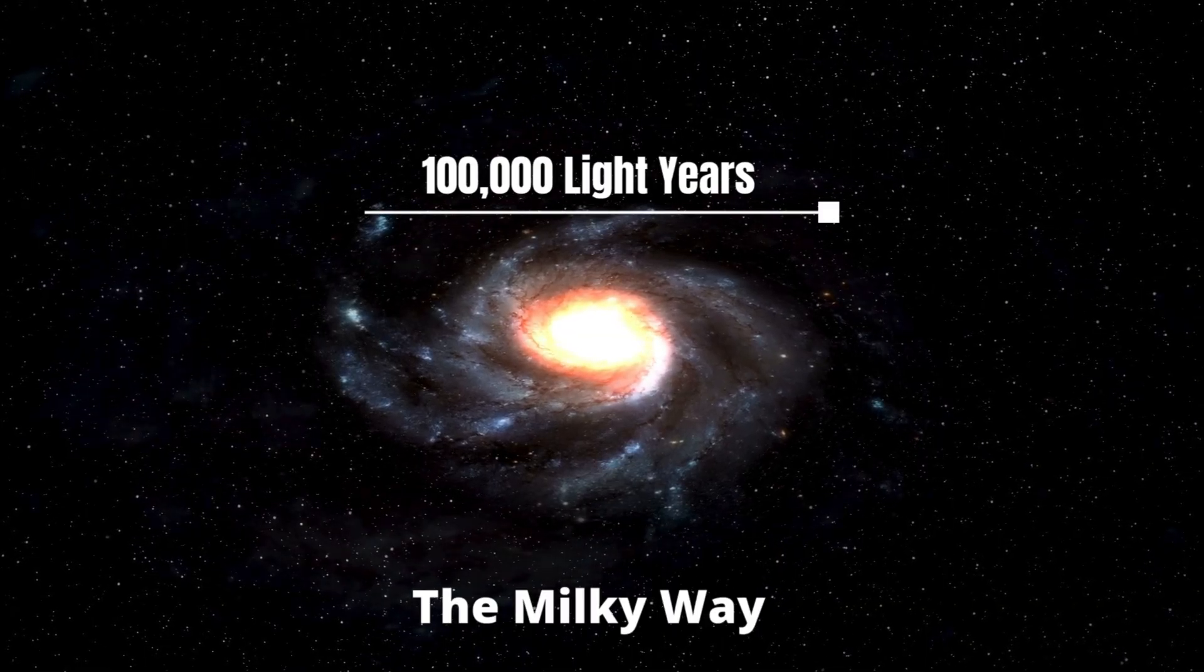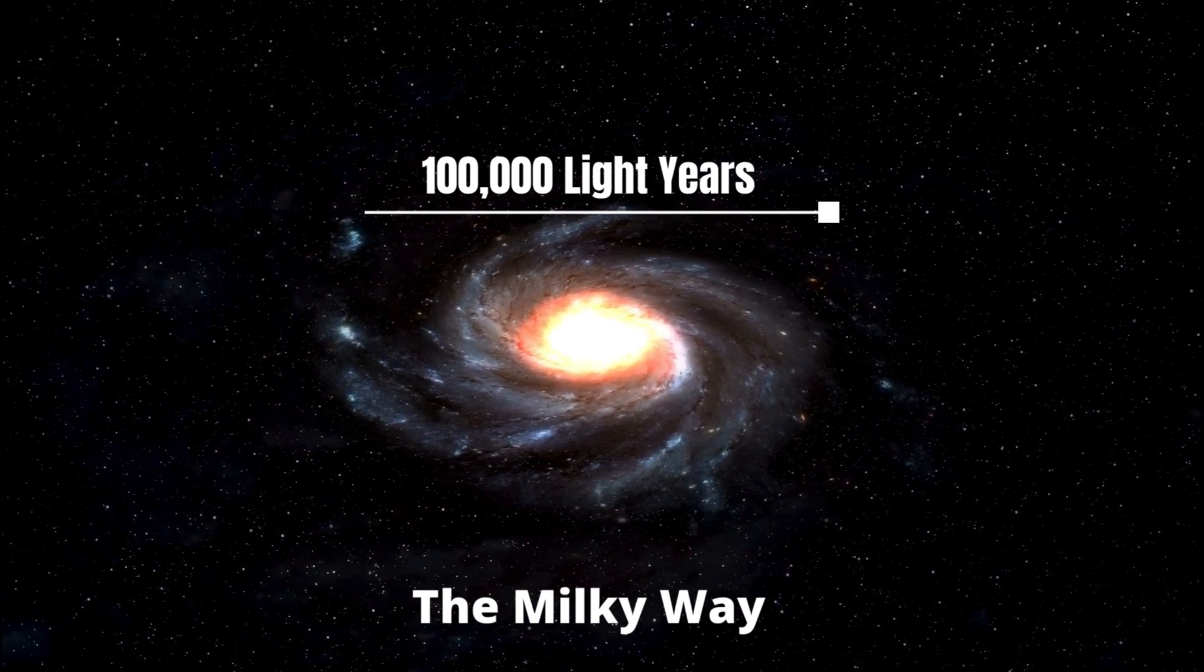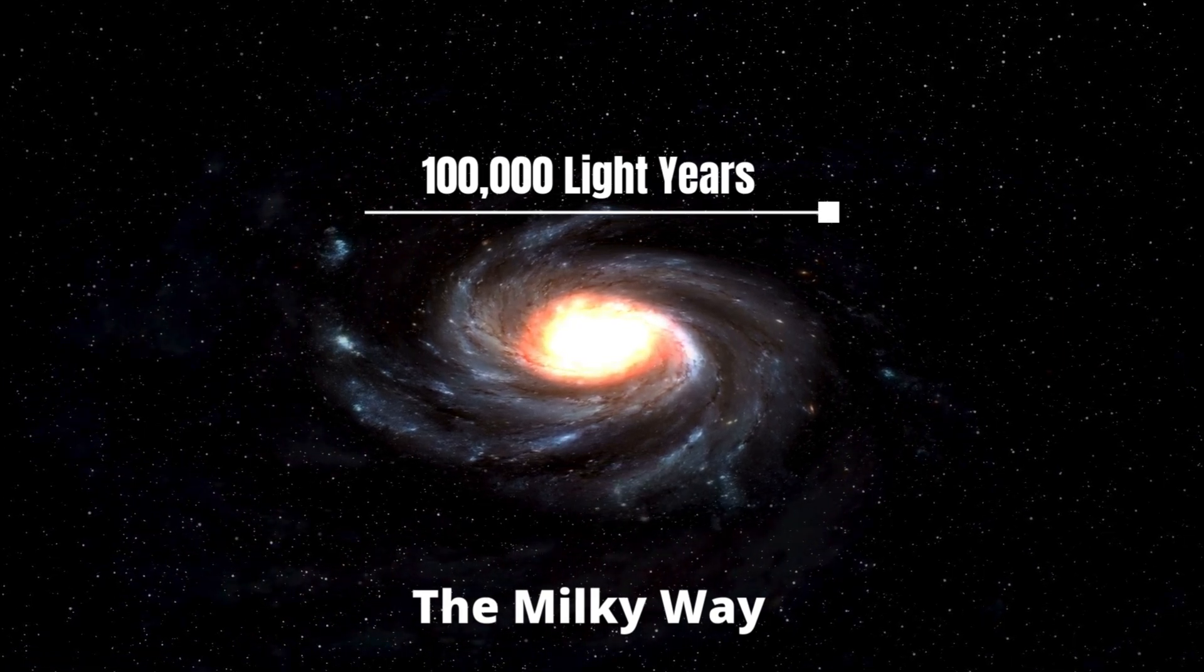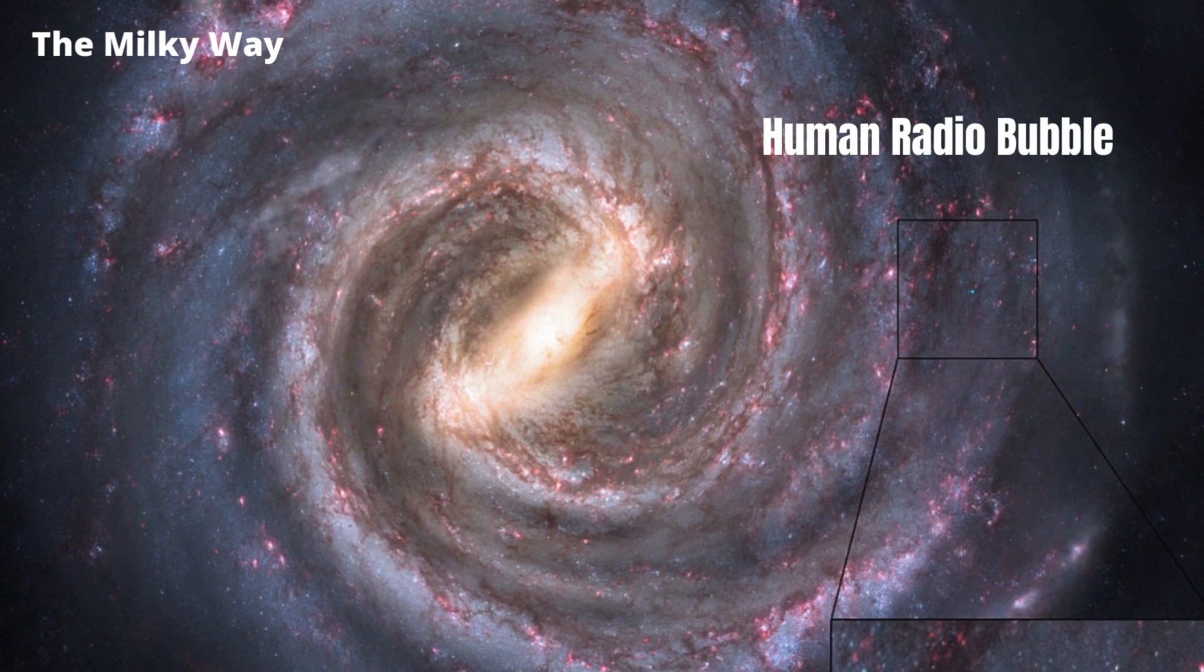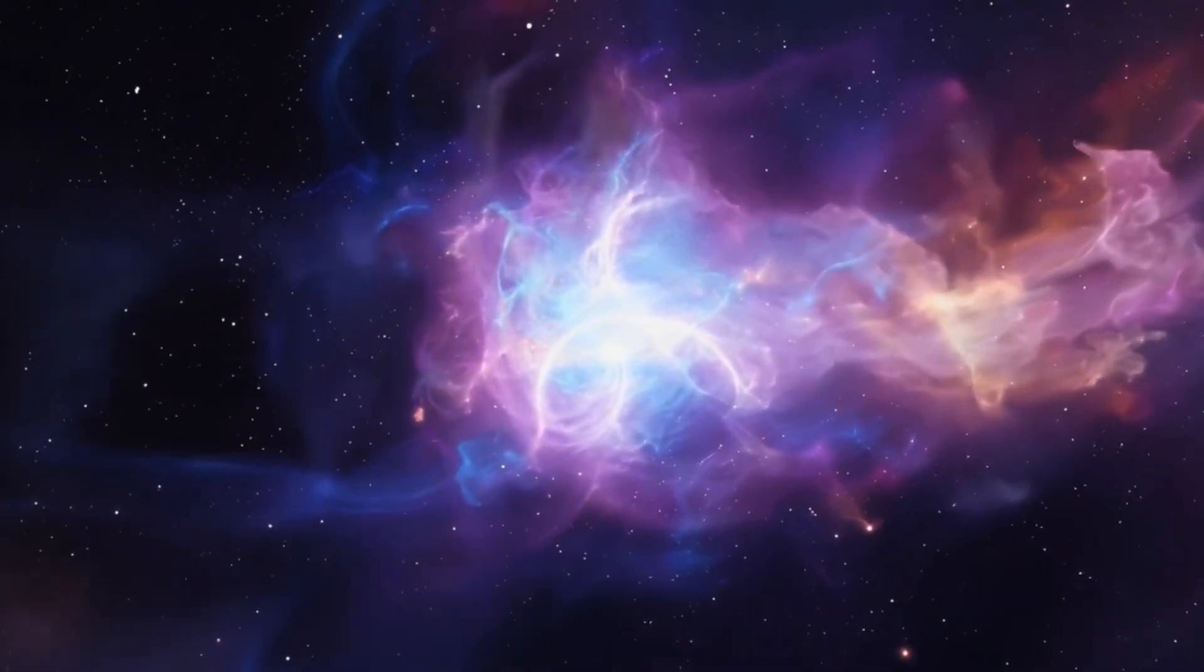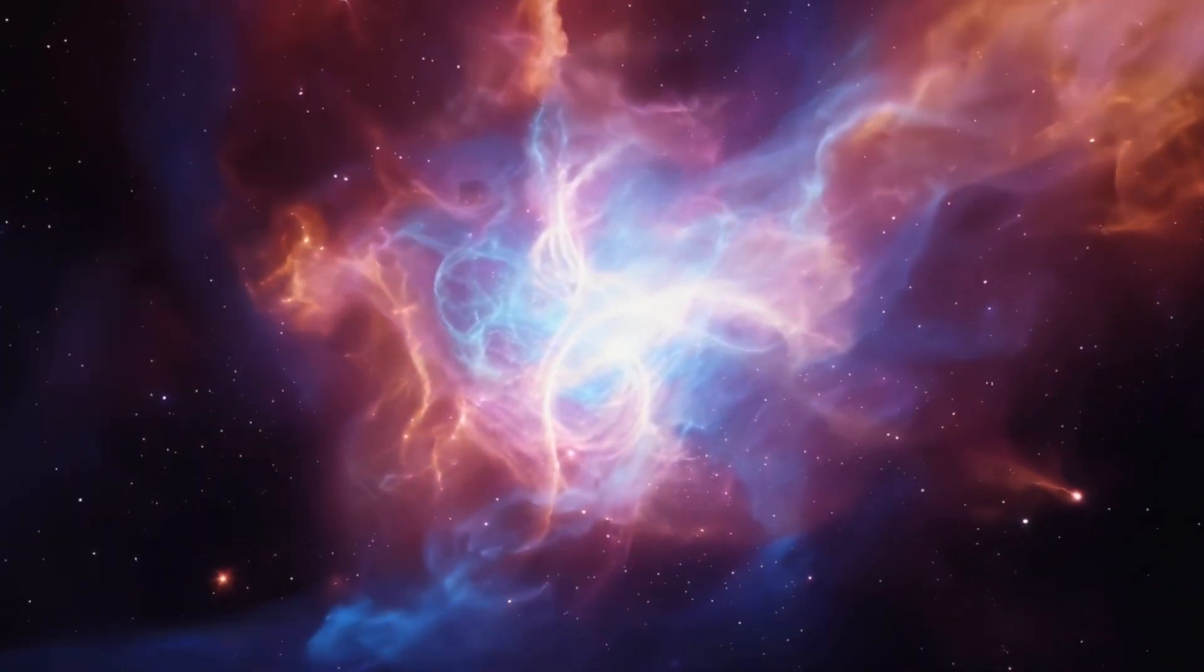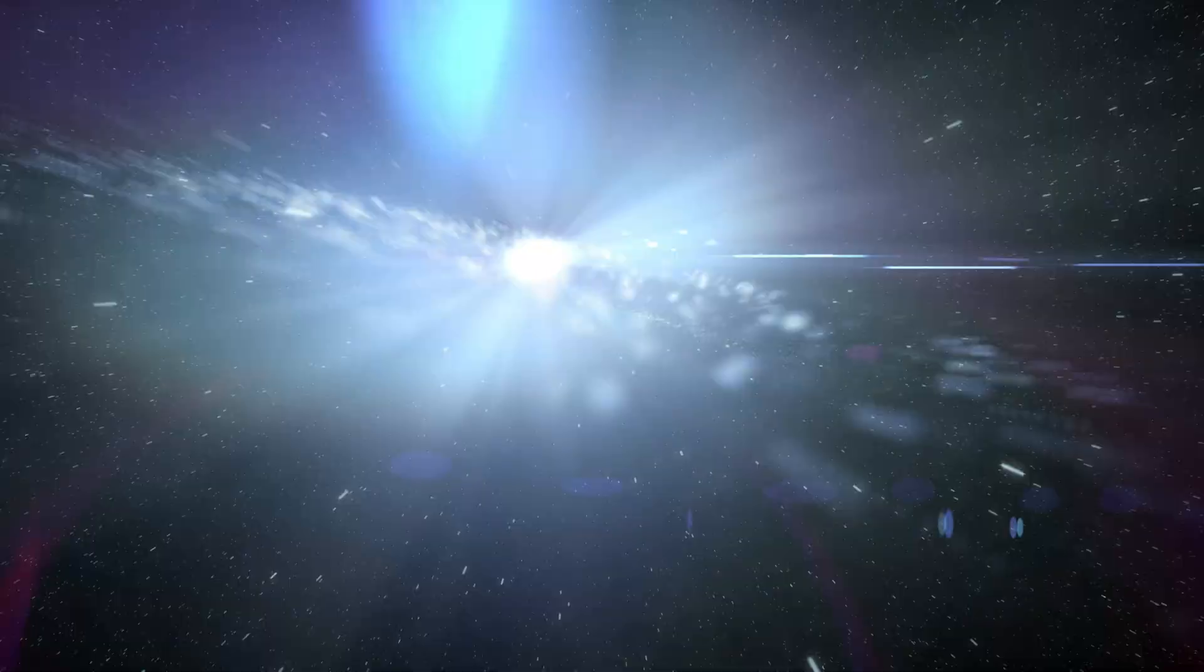Zooming out even further, we arrive at the grand scale of our home galaxy, the Milky Way. Spanning approximately 100,000 light-years in diameter, this vast spiral galaxy contains hundreds of billions of stars, many of which likely host their own planetary systems. Within this colossal structure lies a small but significant sphere, the human radio bubble, extending about 100 light-years from Earth. This bubble represents the farthest reach of human influence in the cosmos, the outer boundary where our radio and television signals have traveled. Beyond this point, it is as if humanity never existed. The Milky Way is so vast that our entire recorded history is nothing more than a faint whisper in the cosmic winds, vanishing beyond the small sphere of human influence.